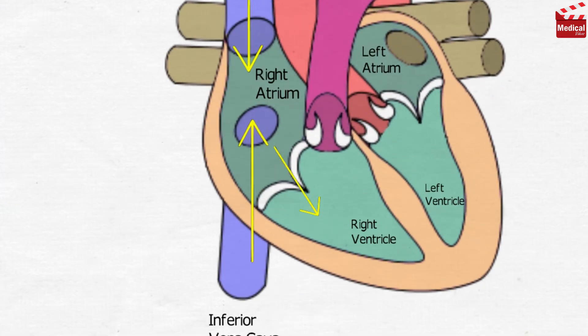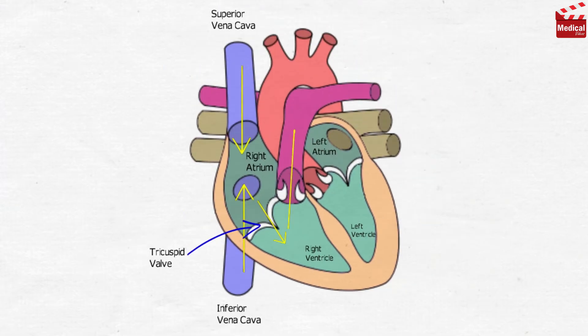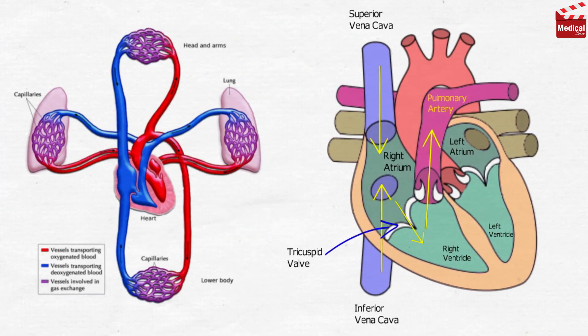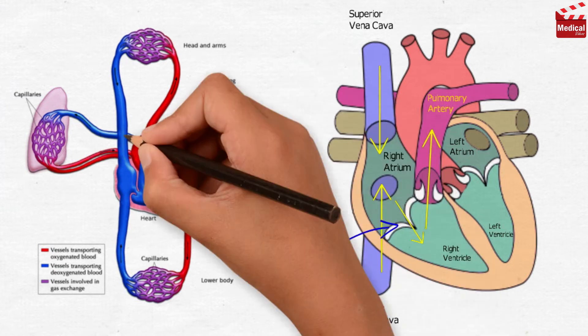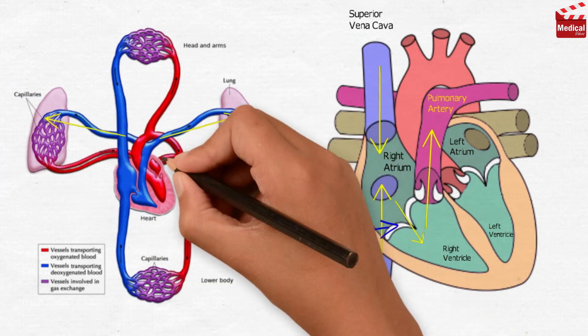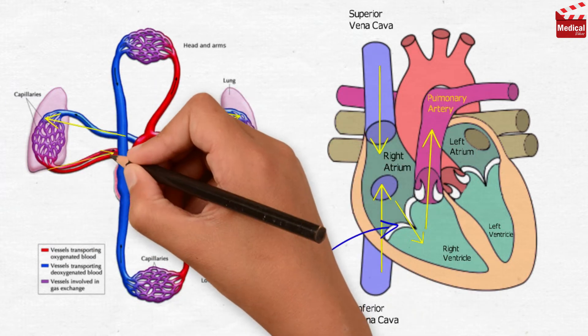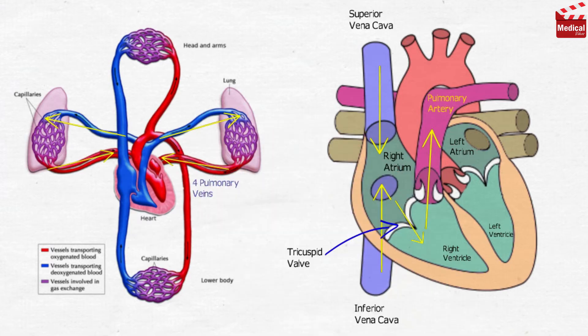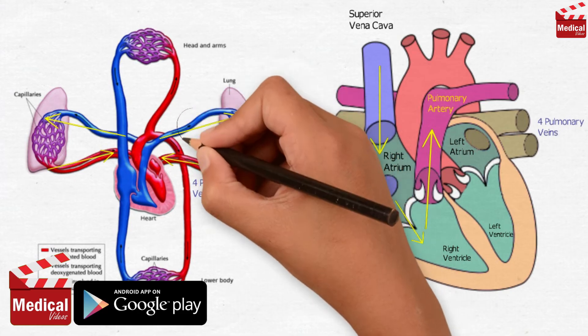The blood passes from the right atrium to the right ventricle through the tricuspid valve, then contracts to push the blood through the pulmonary artery to the lungs, where exchange of oxygen and carbon dioxide occurs. Then oxygenated blood returns to the lungs through four pulmonary veins that enter the left atrium.